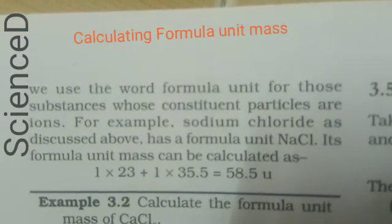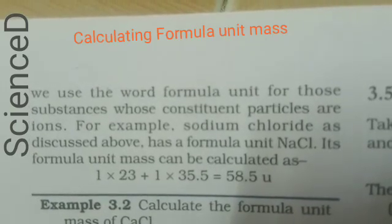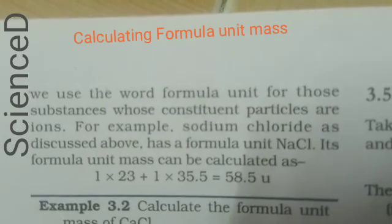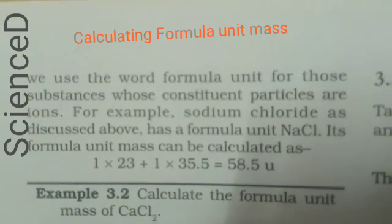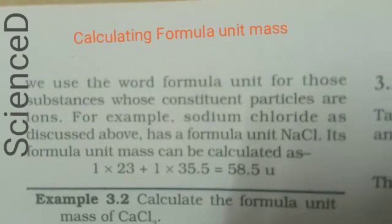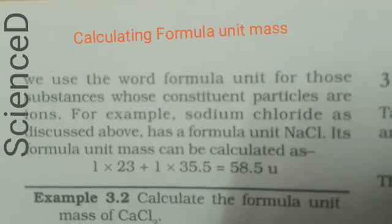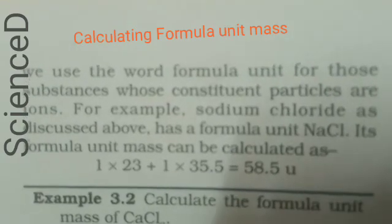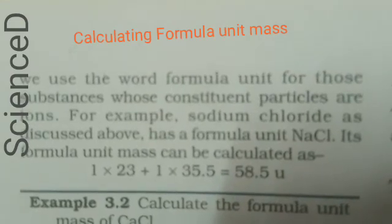Its formula unit mass can be calculated as 1 times 23 plus 1 times 35.5. And 23 is the atomic mass of sodium, and 35.5 is the atomic mass of Cl. If you are adding both values we can get 58.5 atomic mass units.